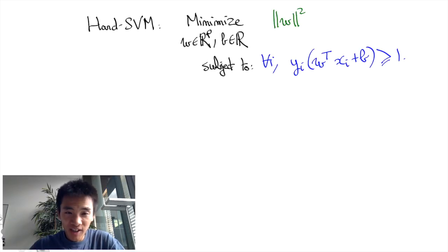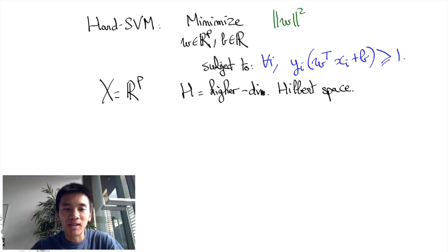Now the idea of the kernel trick was to embed the feature space X into some higher dimensional Hilbert space H using a map phi that goes from X to H. But now not only do the features XI turn into higher dimensional features phi of XI, but as well we need to consider a slope vector W that belongs to H.